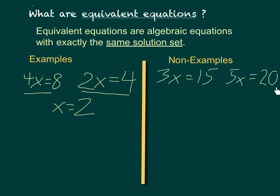These two, however, are not equivalent because the one on the left, when we solve it by dividing both sides by 3, gives us x equals 5, and that's not equivalent to the one on the right, where if we divide both sides by 5, we get x equals 4. Clearly not equivalent solution sets.